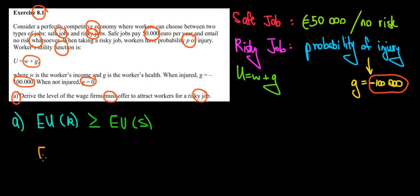Remember, we have a wage because we have to deal with the utility function. We have a certain wage, which we do not know, we want to find it out. Plus we have a probability. Let's call that probability P. It's actually given to us. We have a probability P that we might lose 100,000 euros.